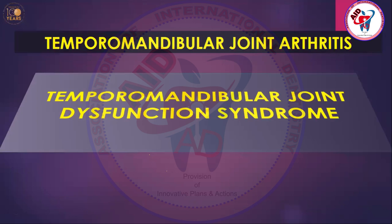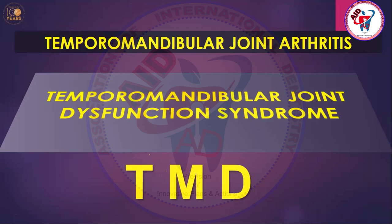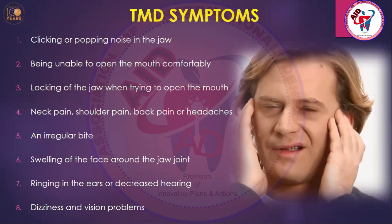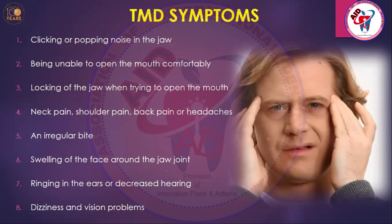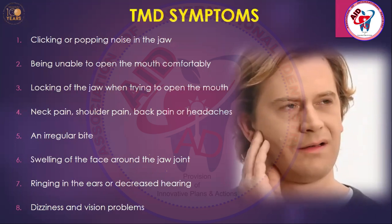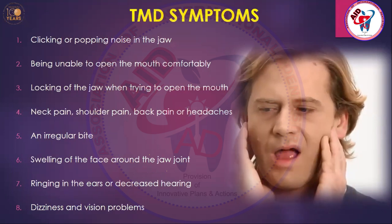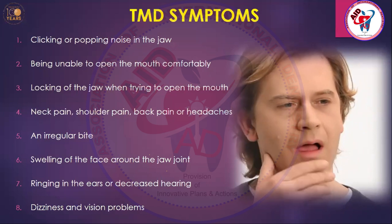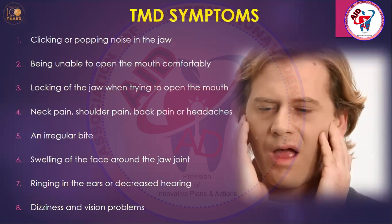Now we move to temporomandibular joint dysfunction syndrome, also called TMD or TMJ arthritis. The syndrome is a combination of many factors giving many signs and symptoms. TMJ symptoms include pain that can be felt at the forehead, lateral frontozygomatic area, low level of the joint, upper level of the joint, around the eye, and deviating to the chin — patients say 'I have pain everywhere.'